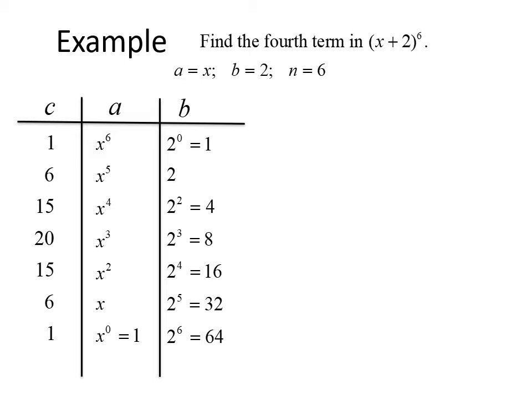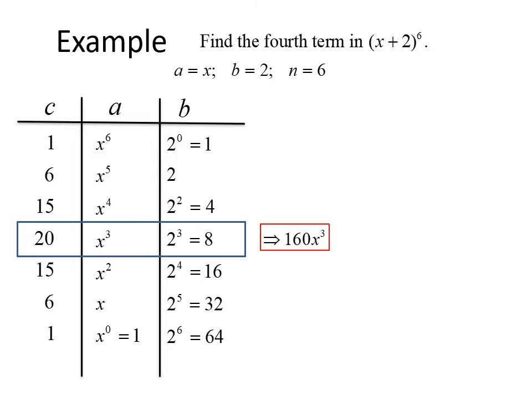This problem only asks us to find the 4th term in the expansion, so we don't need to multiply together every row — we just need the row that represents the 4th term. That gives us 20 times x cubed times 8, which equals 160x cubed. So 160x cubed is the 4th term in the expansion of (x + 2) to the sixth.